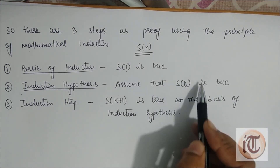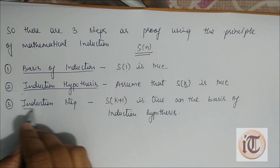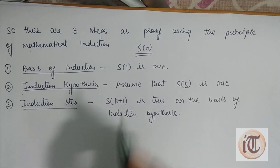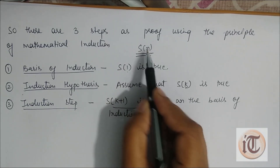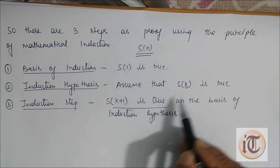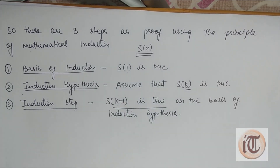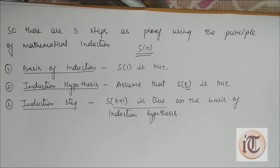With the help of this assumption, in the third step — which is called the induction step — we find that S(k+1) is true, meaning instead of n we put k+1. Then with the help of this assumption, we find out whether the left-hand side equals the right-hand side and verify the validity of the statement S(n). With the help of these three steps, we are going to discuss one example in which we use all three steps.